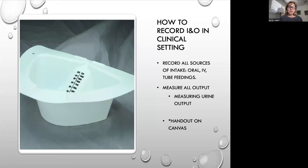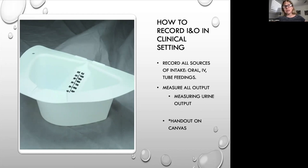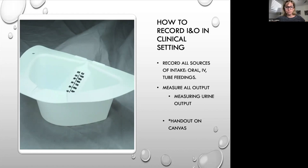To record intake and output in the clinical setting, there is a device called a hat that sits at the outer rim of the toilet so the patient urinates into it. Give clear instructions since patients may throw toilet paper in there. You want to record all sources of intake — oral fluids, IVs, and tube feedings — and measure all output, which includes urinary output. We'll go over this more when we have lab.